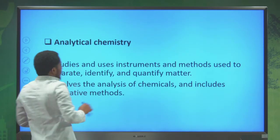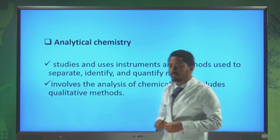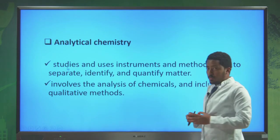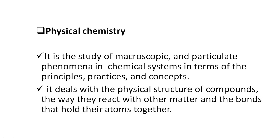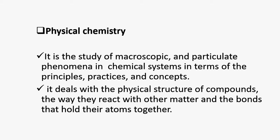We usually classify chemistry into five main branches. The first is analytic chemistry, which is a branch of chemistry that studies and uses instruments and methods to separate, identify and quantify matter. Analytic chemistry involves the analysis of chemicals including qualitative methods. The second branch is physical chemistry, which studies microscopic and particulate phenomena in chemical systems in terms of principles, practices and concepts. It deals with the physical structure of compounds, the way they react with other matter, and the bonds that hold their atoms together.